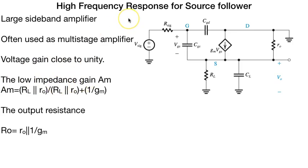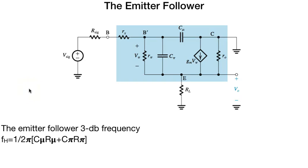Also, the high frequency response for source follower has large bandwidth, often used as a multi-stage amplifier. Voltage gain close to unity, low output impedance. In this common source amplifier, Am equals RL in parallel with RL plus 1 over Gm. For emitter follower, the frequency is 1 over 2π Cμ Rμ plus Cπ Rπ. This is the diagram: Gm Vπ, Cπ, Cμ, Rπ, plus minus Vπ is the voltage, Gm Vπ, RL, R0.